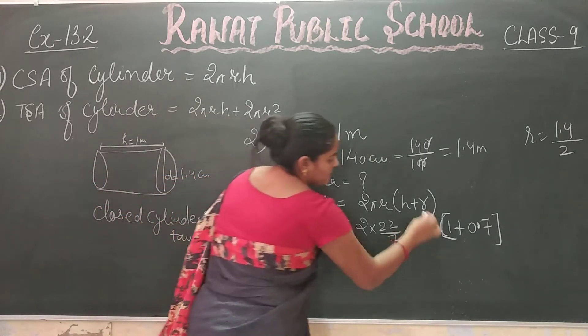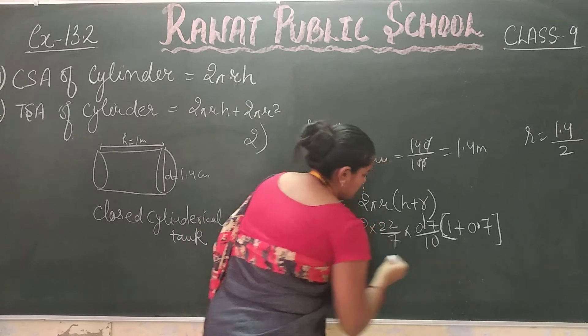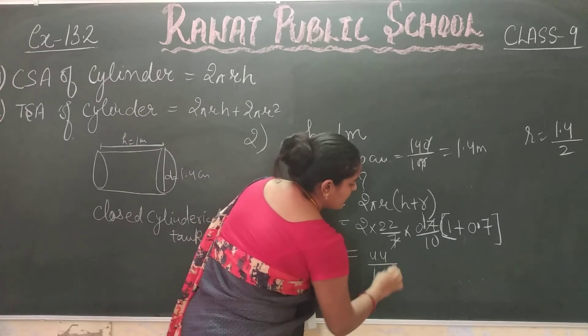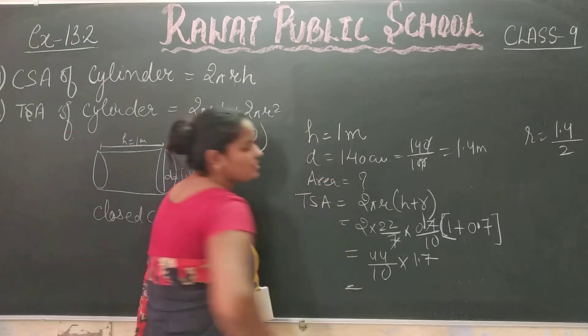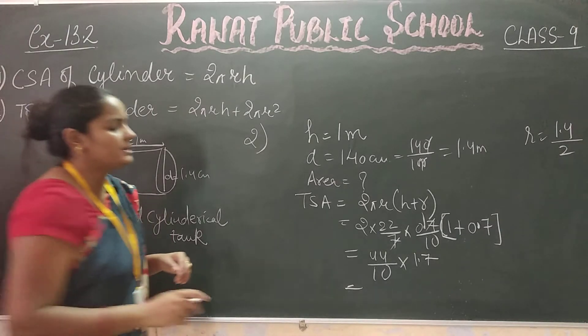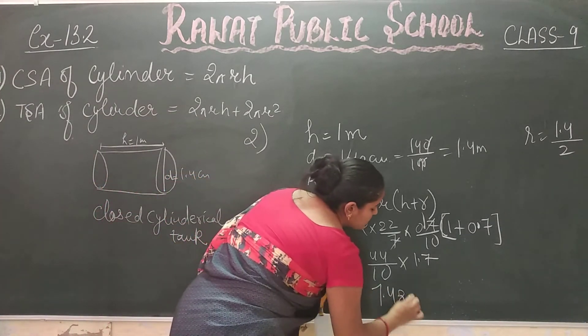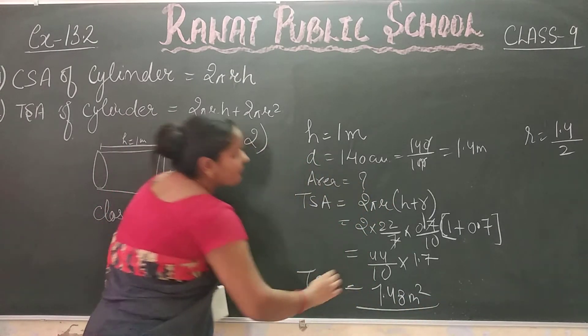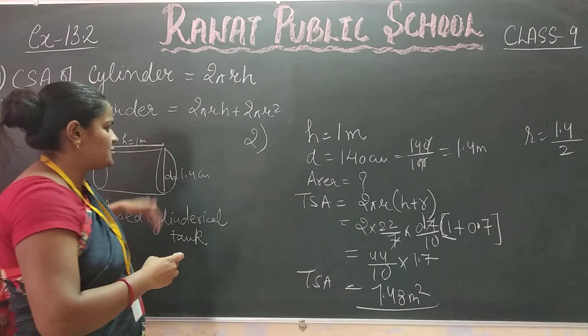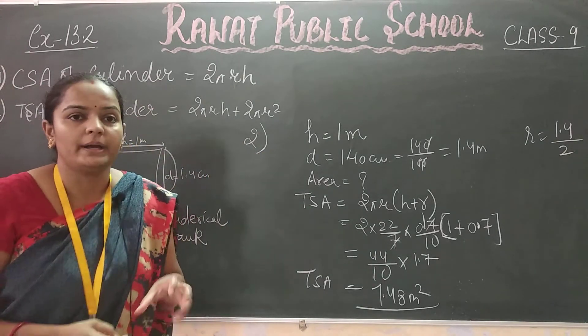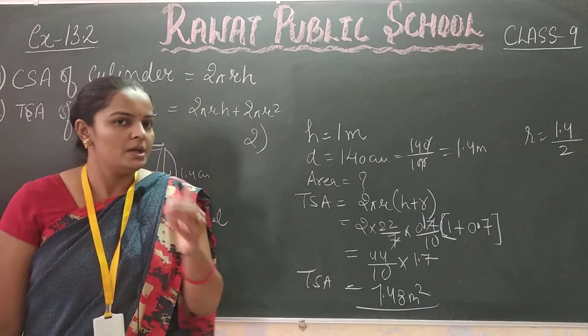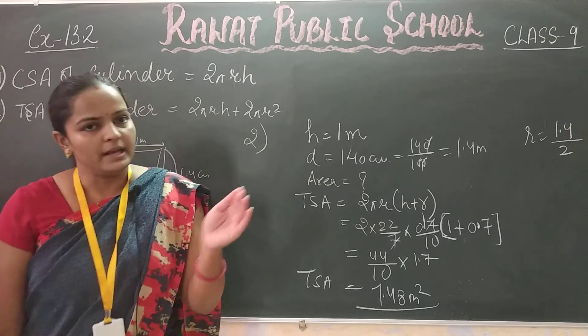This calculation will cancel terms. 7 cancels, leaving 14 upon 10 times 1.7. The answer is 7.48 m². This is the total surface area needed for the cylindrical tank including top and bottom cover.